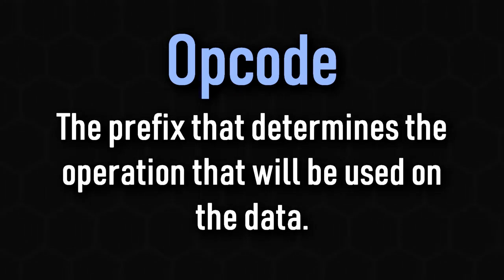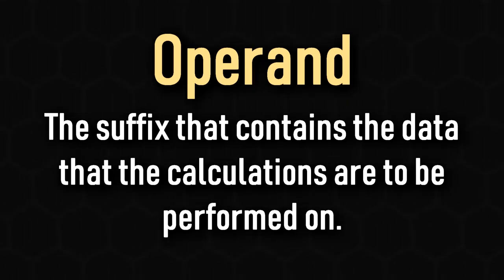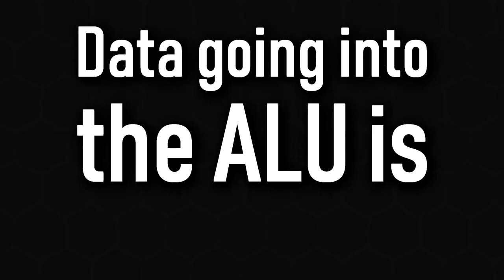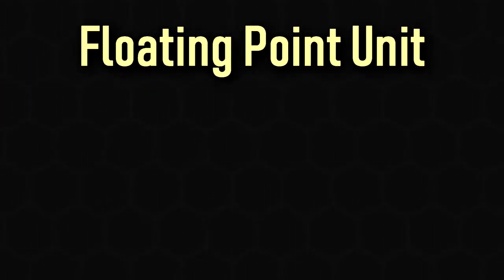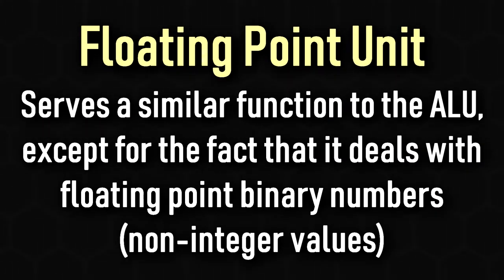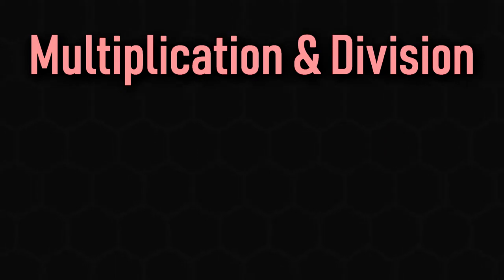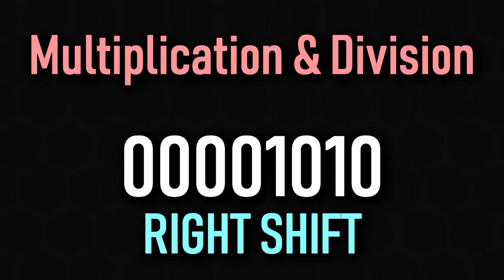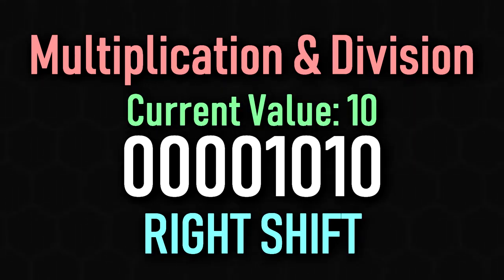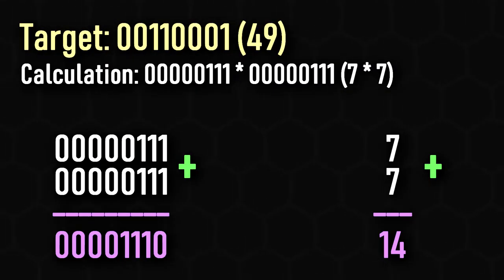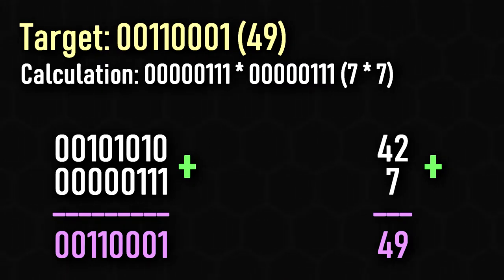This data is interpreted as opcode and operand. An opcode is a binary value that determines the operation to be performed on the data, while the operand is basically the data being used. The data input into the ALU is always an integer — a number with zero decimal places — and the same applies to data being output. This differs from a floating point unit, or FPU, which can do calculations on floating point numbers. In multiplication and division operations, the ALU can shift bits left and right respectively: shifting bits left multiplies the value by 2, shifting right divides by 2. Alternatively, multiplication and division can be carried out by repeatedly adding or subtracting, which is fairly simple to do with binary numbers.